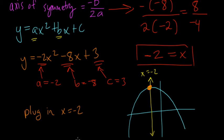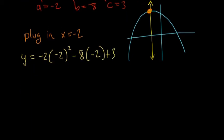Plug in x equals negative 2 into your formula. So y is equal to negative 2 times negative 2 squared minus 8 times negative 2 plus 3. Well, negative 2 squared is 4 times negative 2 is negative 8 plus 16 minus negative 16 plus 3.